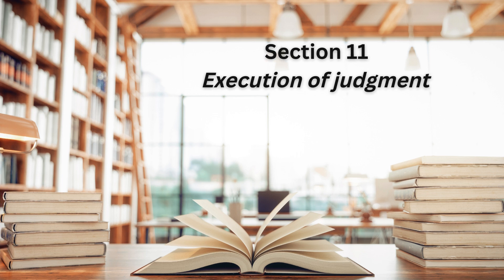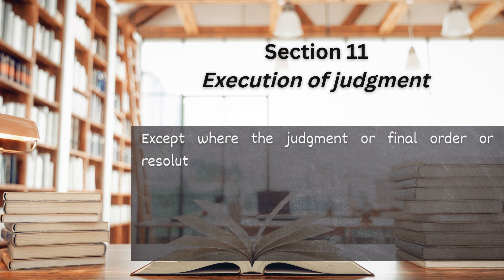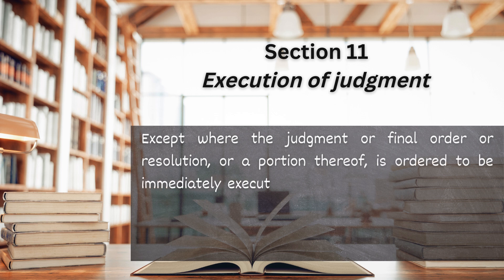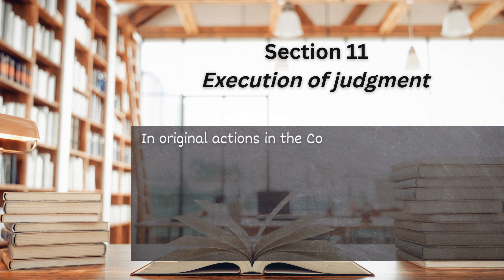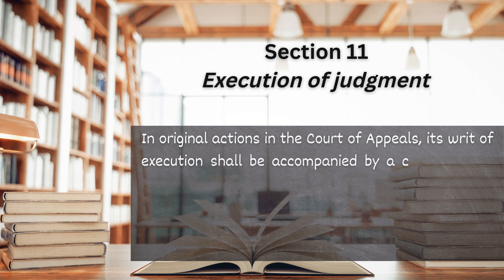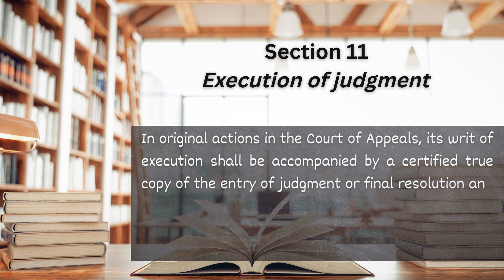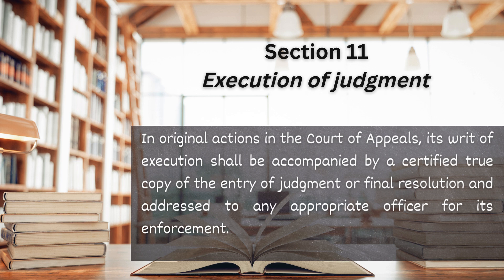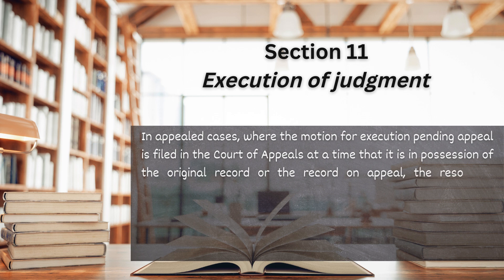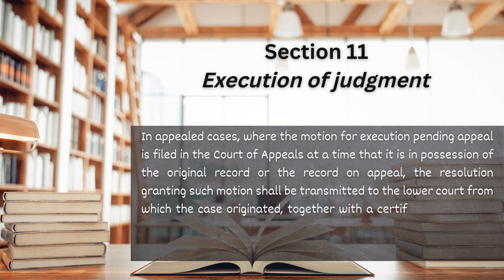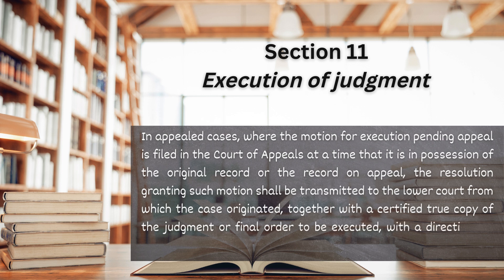Section 11. Execution of judgment. Except where the judgment or final order or resolution or a portion thereof is ordered to be immediately executory, the motion for its execution may only be filed in the proper court after its entry. In original actions in the Court of Appeals, its writ of execution shall be accompanied by a certified true copy of the entry of judgment or final resolution and addressed to any appropriate officer for its enforcement. In appealed cases where the motion for execution pending appeal is filed in the Court of Appeals at the time that it is in possession of the original record or the record on appeal, the resolution granting such motion shall be transmitted to the lower court from which the case originated together with a certified true copy of the judgment or final order to be executed, with a directive for such court of origin to issue the proper writ for its enforcement.